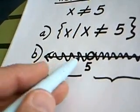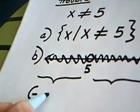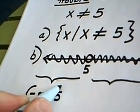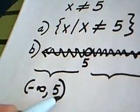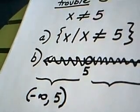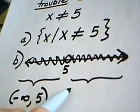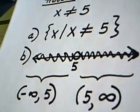This region to the left of 5 could be written as paren negative infinity comma 5. We put a paren on the 5 because, again, remember what a paren means. 5 is not included.